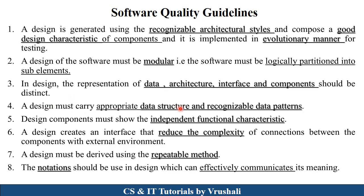The next guideline is: the design must carry appropriate data structures and recognizable data patterns — meaning which type of data structure and database is used in a particular product and their data patterns should all be mentioned in the design. Next: design components must show independent functional characteristics — each and every component in the product has different features, and in design you need to show the independent functionality of each component. Next: a design creates an interface that reduces the complexity between components and the external environment. For example, when you click a submit button, your data is stored in the database — there is connectivity between the form and the database. Similarly, in an embedded system project, different hardware components like sensors and LEDs are connected to the program, and all those connections should be mentioned in the design.